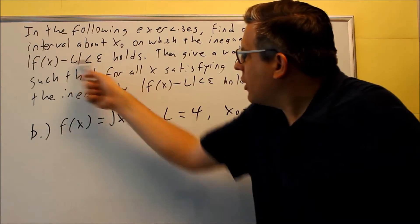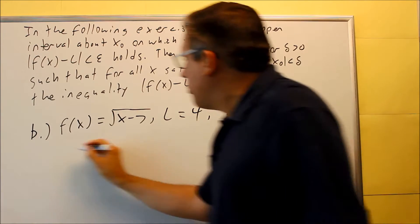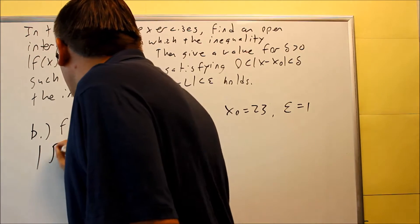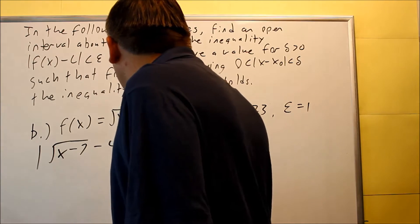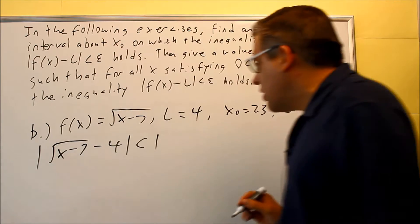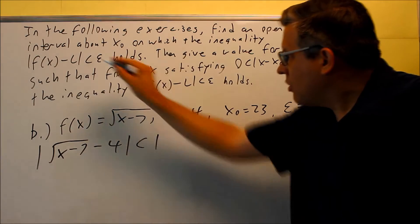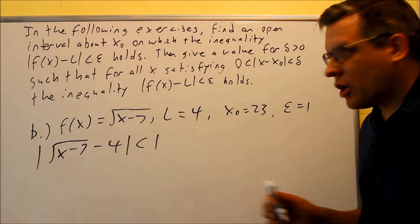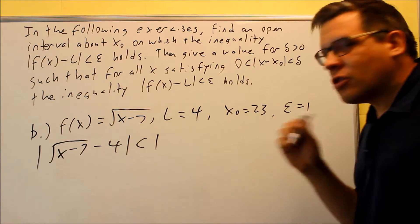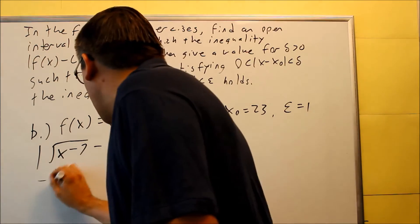So first open interval, we're going to plug everything into that particular formula. So we're going to do square root of x minus 7 minus 4 less than epsilon is given as 1. So we just plug everything all in to the formula. We need to solve this one for x. So we've got to remove the absolute values, turn it into an inequality. This is going to be between negative 1 and 1.